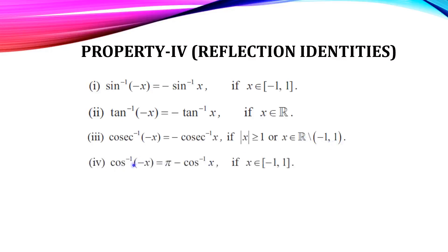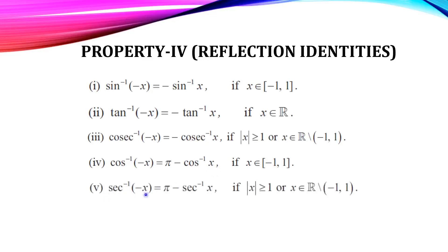Fourth, cos inverse of (−x) = π − cos inverse of x, if x belongs to [−1, 1] — that is the domain of the cos inverse function. Fifth, secant inverse of (−x) = π − secant inverse of x, if |x| ≥ 1 (or x belongs to real numbers except (−1, 1)). The last one: cot inverse of (−x) = π − cot inverse of x, if x belongs to all real numbers.